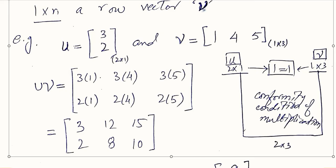There is a certain way to multiply the two matrices — row into column. We start with the first row, which contains only the element 3. We multiply 3 with the first element of the column of the second matrix. So 3 is multiplied with 1, then with 4, then with 5. Then we take the second row element, which is 2, and multiply 2 with 1, then 2 with 4, and 2 with 5. This covers the first, second, and third columns.